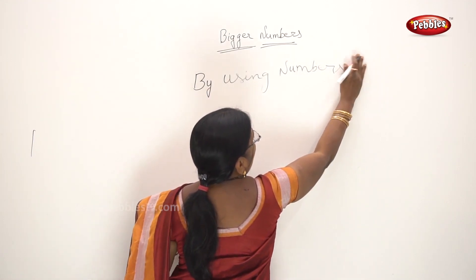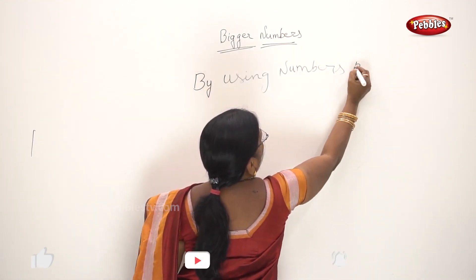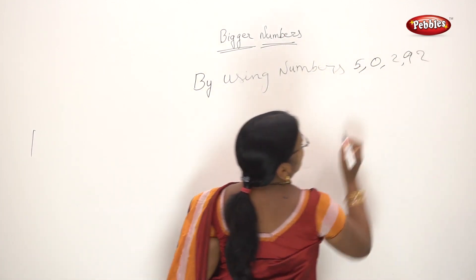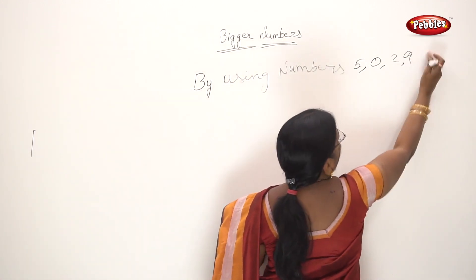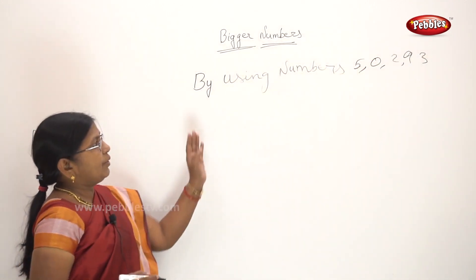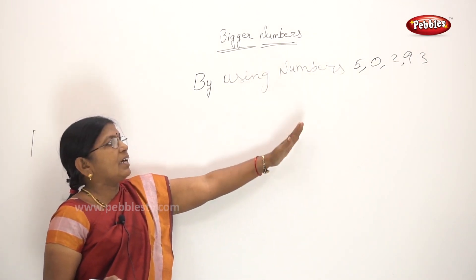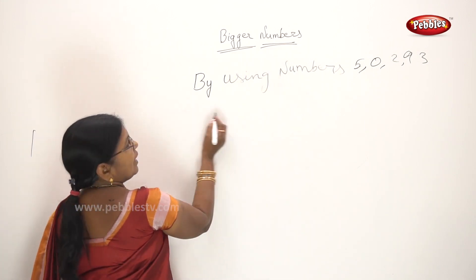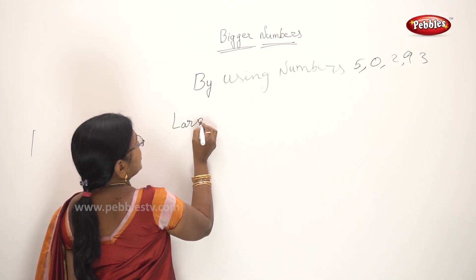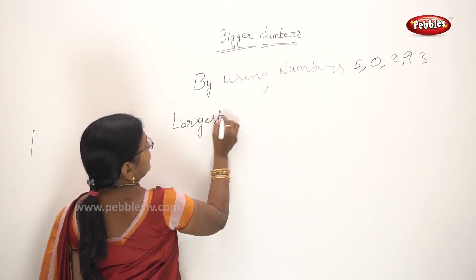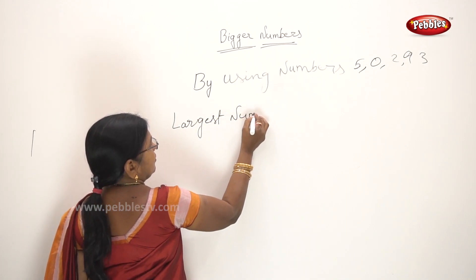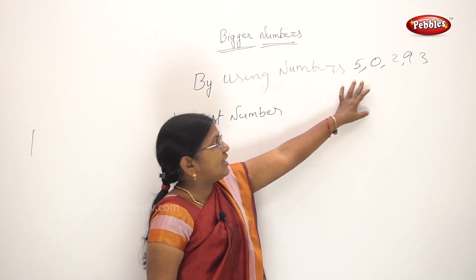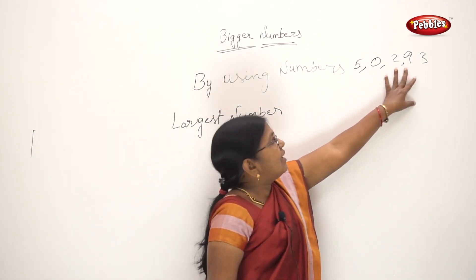Given the digits 5, 0, 2, 9, 2, 3 — by using these numbers, we can write the largest number and the smallest number. First, we will write the largest number. What is the largest number? We start with the largest digit.